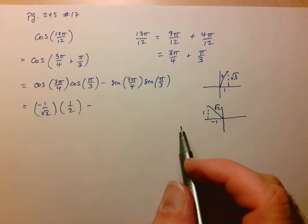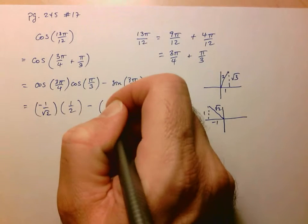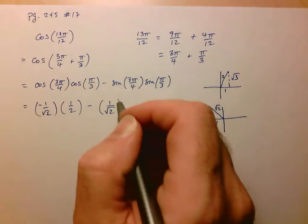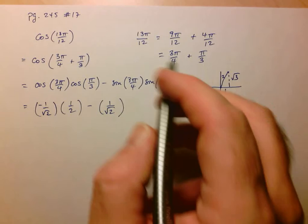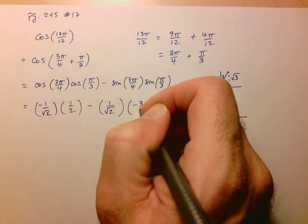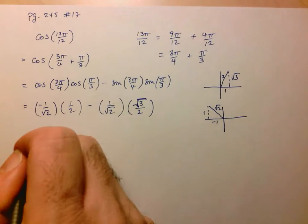Minus sine of 3π over 4 is going to be 1 over root 2. And then here, sine of π over 3 is just going to be positive root 3 over 2.